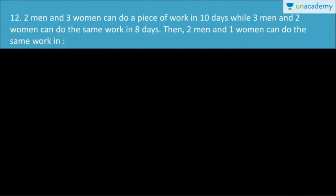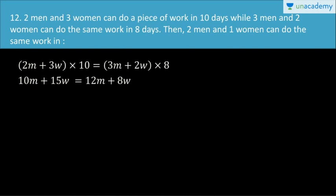Two equations are set up. First: 2M plus 3W for 10 days. Second: 3M plus 2W for 8 days. The equation becomes: 2M plus 3W into 10, equal to 3M plus 2W into 8.